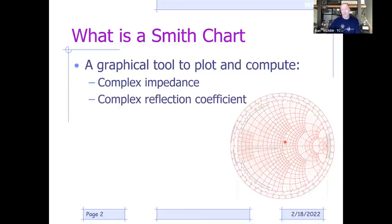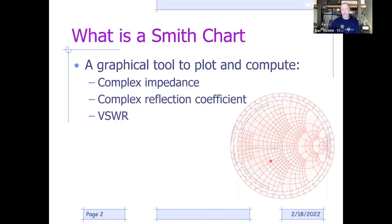We can also look at the complex reflection coefficient, which arises from that complex impedance not being matched to the transmission line, creating a reflection. That reflection has a magnitude and a phase—which is why we call it a complex reflection coefficient. We're probably most familiar with SWR or VSWR; we can actually read that off a Smith chart as well.